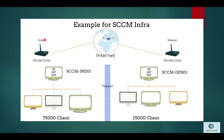Let's understand this with the help of an example. Let's say there is a company which has two locations — one is in India and another one is in Denver. I want my India clients to be managed with my resource SCCM-IND01, which has roles installed like distribution point, management point, software update point, or any other role. If I don't have any boundary created, there is a possibility that the machine will not get any content or location, and my machine will not be able to communicate to any distribution point or management point.